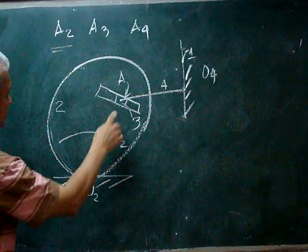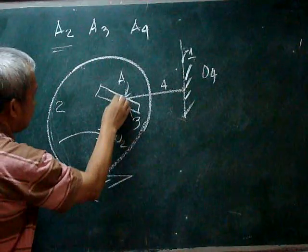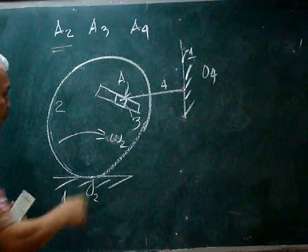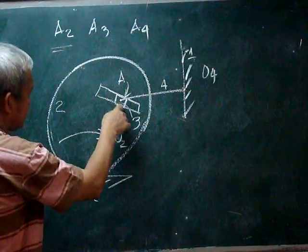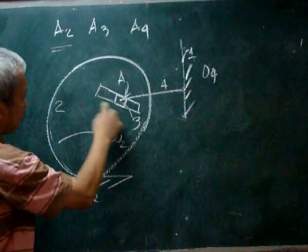We will know that there is a point A in body 2, a point A in body 3. That body 3 is the body which is moving along the slot in body 2.